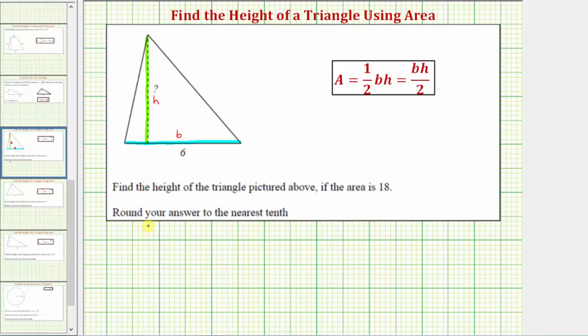So the area is equal to one-half times the base, which is six units, times the height, which is unknown, which we know must be equal to 18. And now we need to solve this equation for H by isolating H on one side of the equation. Let's first simplify the left side.